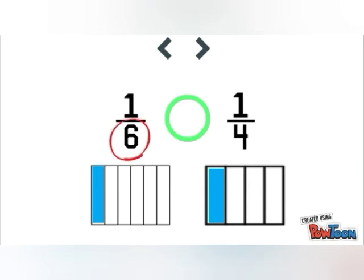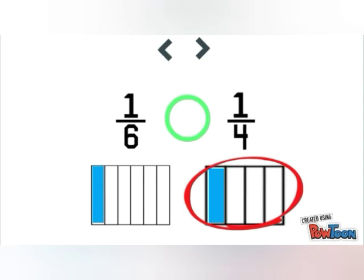Since 1 fourth is greater amount shaded in than 1 sixth, 1 upon 4 is greater than 1 upon 6. So children, while comparing unit fractions, just look at the denominator. Smaller the denominator, bigger the fraction.